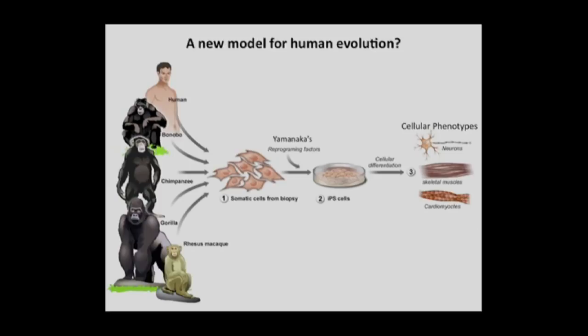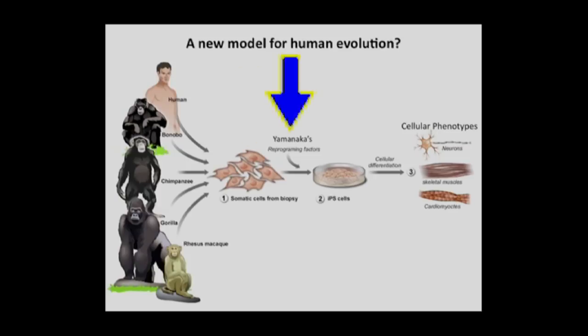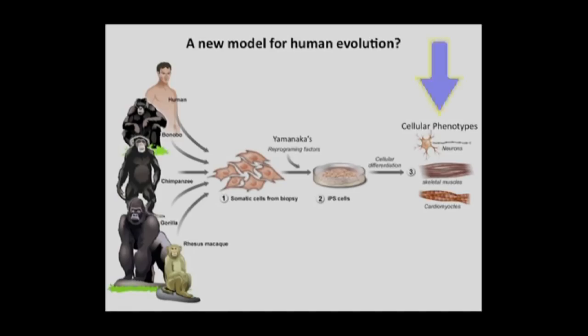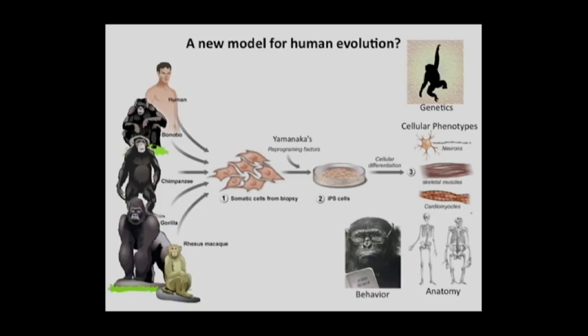The proposal here is to use induced pluripotent stem cells to study different primate species. We can isolate somatic skin cells from primates in a nearly non-invasive procedure, use Yamanaka factors to induce pluripotency, and drive cells to specialize into different cell types. Once we have that, we can ask how a human neuron is different from a chimp neuron, and if we find differences, start connecting them to genetics — linking genetics, anatomy, physiology, and behavior to build a greater understanding of human evolution.